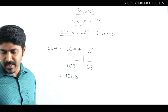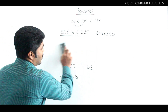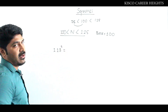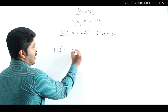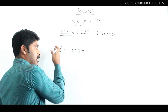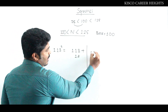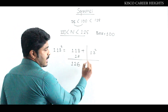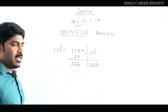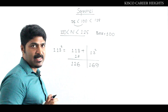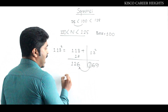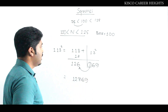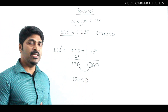Let's take one more number in this range: 113 squared. As usual, the left side is the number plus the complementary, and the right side is the square of the complementary. That gives 126 on the left, and 13 squared equals 169 on the right. We need only two digits on the right, so carry the 1 to the left: 126 plus 1 equals 127, with 69 remaining. Therefore 113 squared equals 12769.